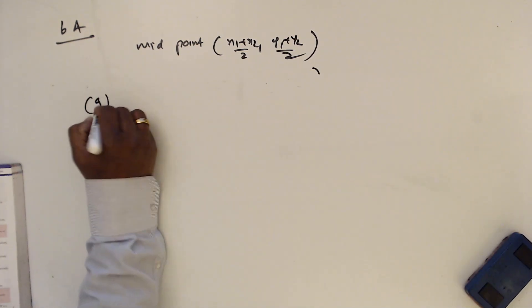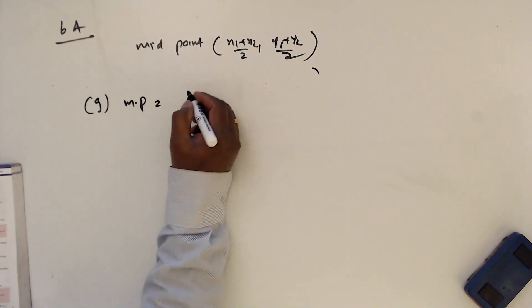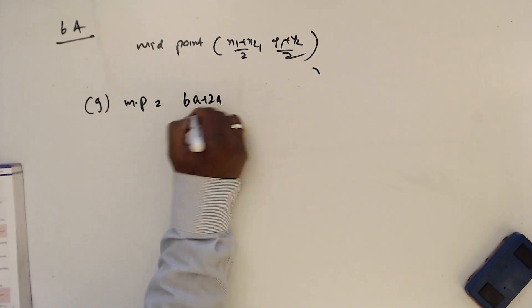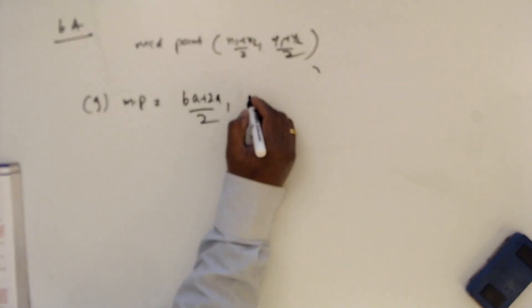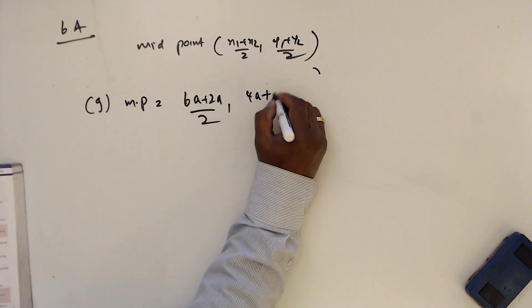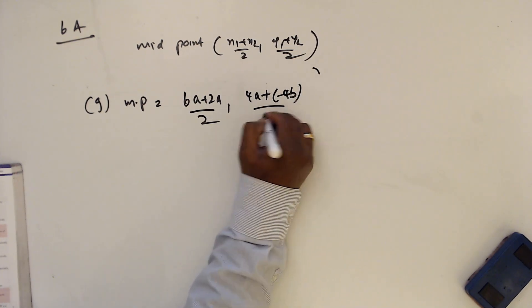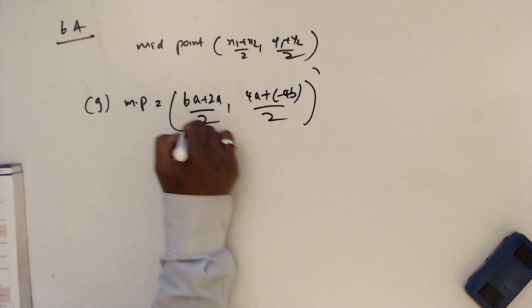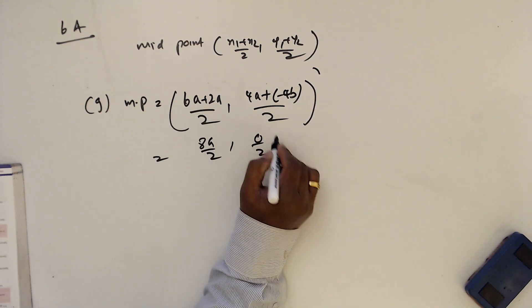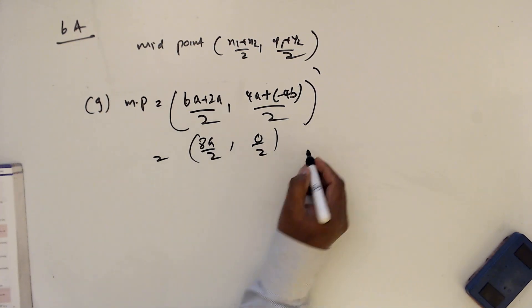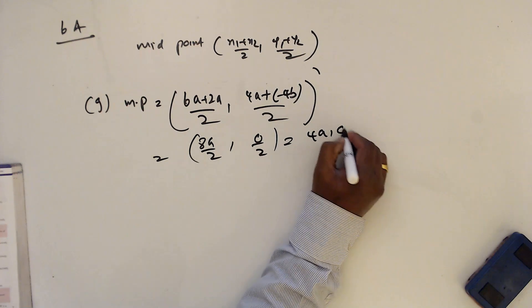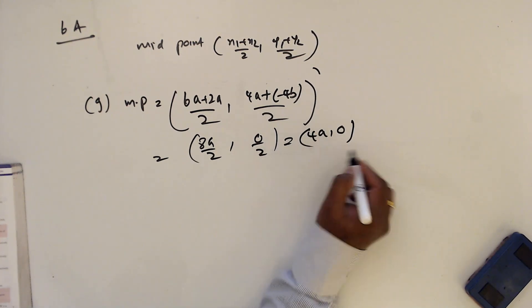Part j: midpoint with algebraic terms — 6a plus 2a divided by 2 for the x values, and 4a plus minus 4b divided by 2 for the y values. So 8a divided by 2 = 4a, and 0 divided by 2 = 0. The midpoint is (4a, 0).